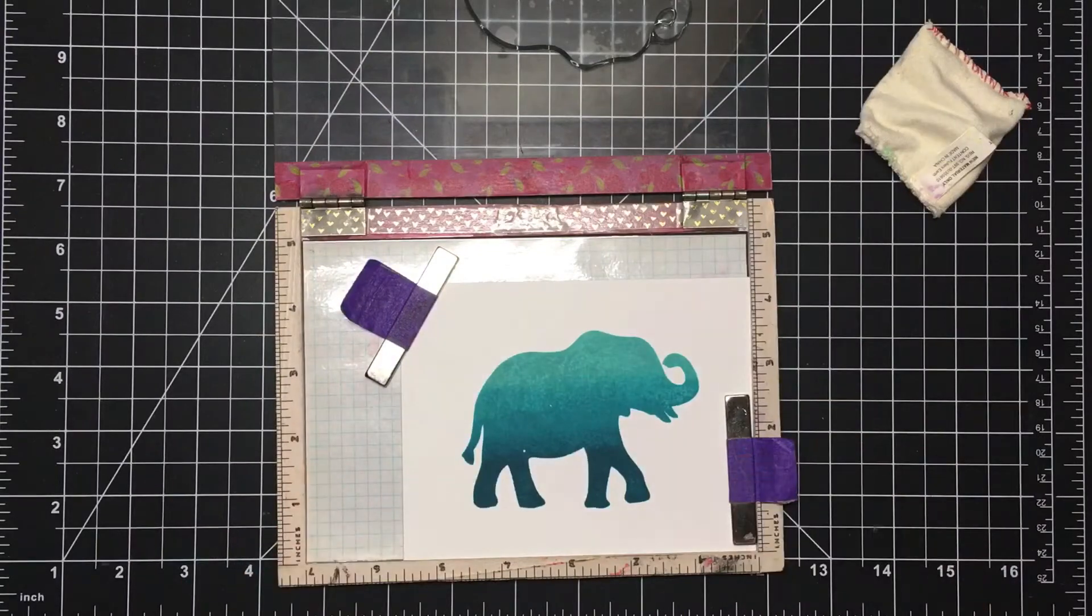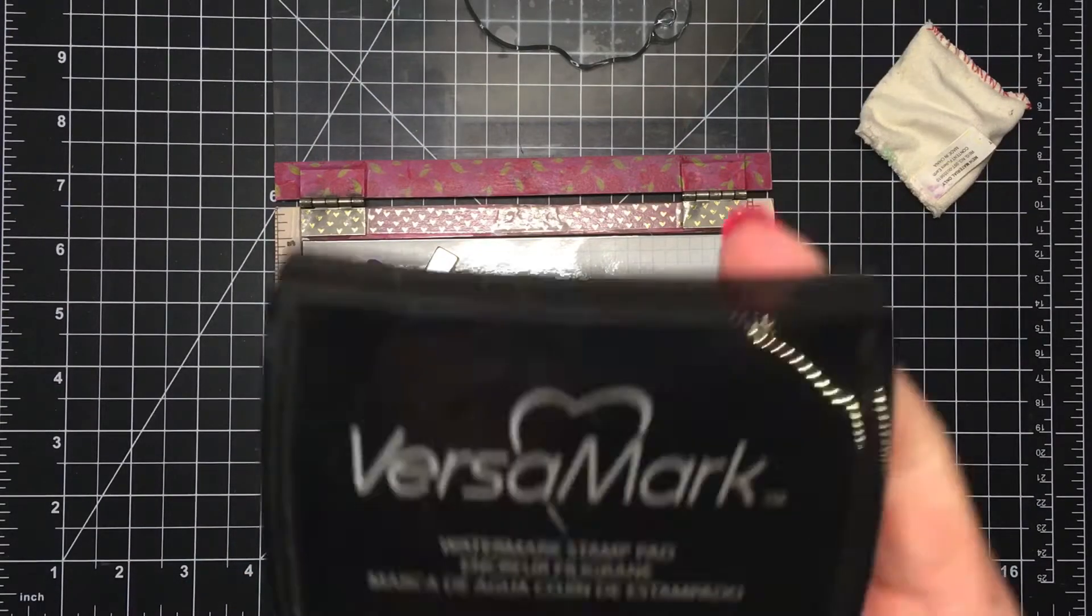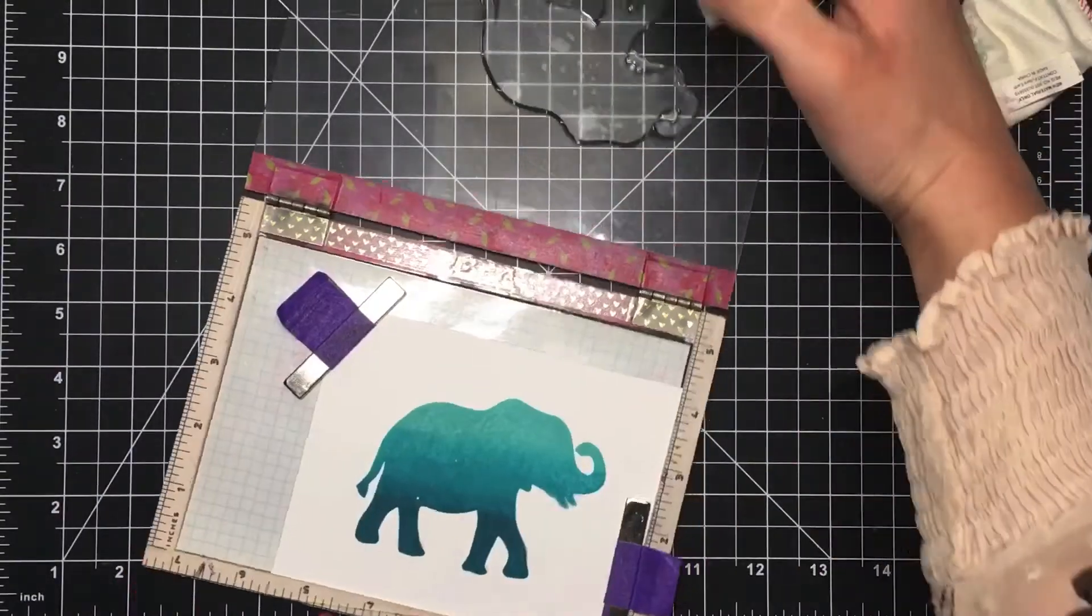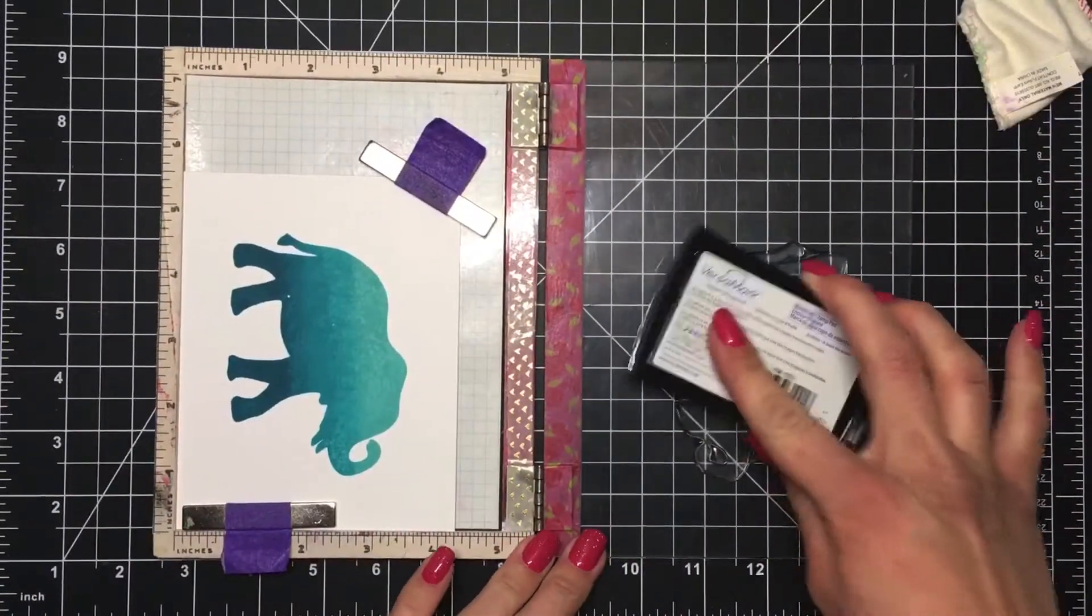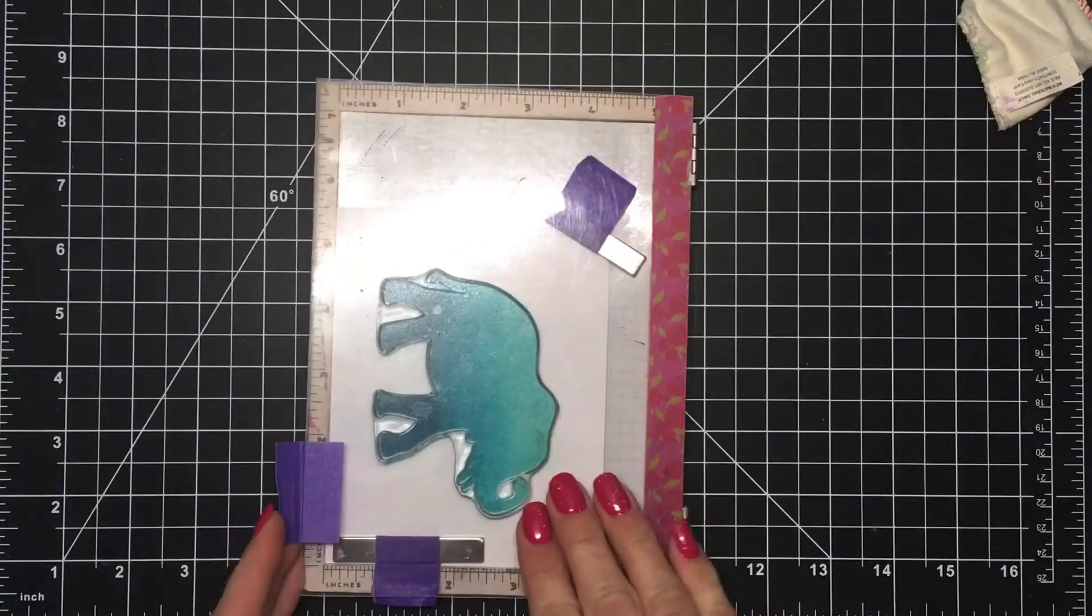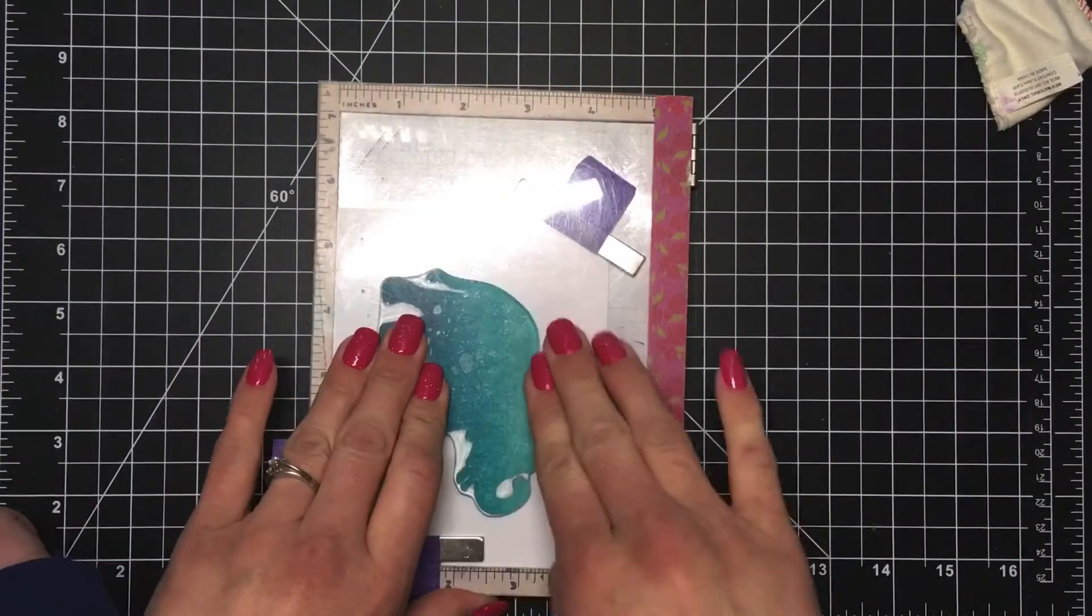When I've finished with that I use my anti-static powder bag and place it over my paper and use some Versamark ink to stamp the elephant down one more time. This time I will be using some Judikins Iridescent Sparkle Embossing Powder.